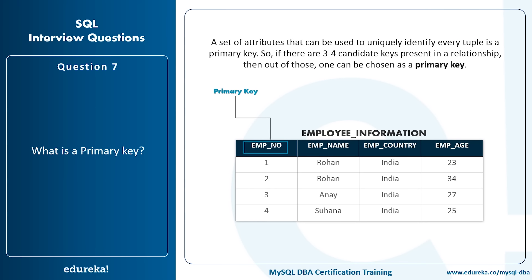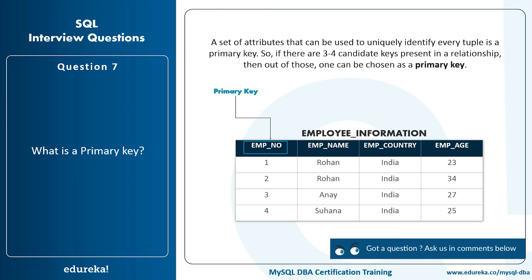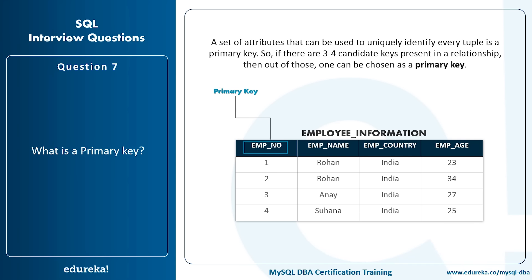What is the primary key? When working in a database, each table needs to be connected with other tables, so we need to uniquely identify rows. A primary key is a set of attributes used to uniquely identify every tuple. If there are multiple candidate keys in a relationship, one can be chosen as the primary key. For example, in an employee information table with columns like employee number, employee name, employee country, and employee age — the employee number uniquely identifies each employee, so it becomes the primary key.